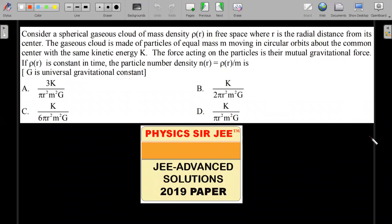Consider a spherical gaseous cloud of mass density ρ(r) in free space where r is the radial distance from its center. The gaseous cloud is made of particles of equal mass m moving in circular orbits about the common center with the same kinetic energy K. The force acting on the particles is their mutual gravitational force. If ρ(r) is constant with time, the particle number density n as a function of r is given by the mass density function divided by mass of each particle m.